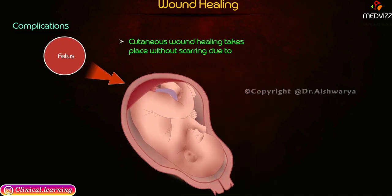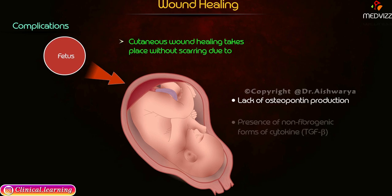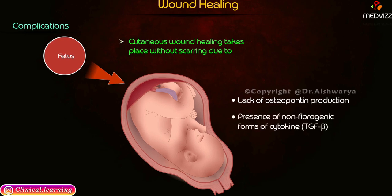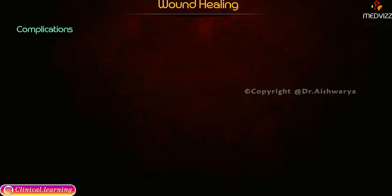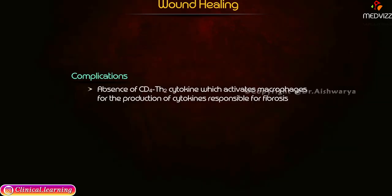Fetal cutaneous wound healing takes place without scarring, mainly due to lack of osteopontin production and the presence of non-fibrogenic forms of cytokines, especially transforming growth factor beta (TGF-β). Because of this, there is less collagen in wound healing in those individuals. The absence of CD4 TH2 cytokine, which activates macrophages for cytokine production, is responsible for the development of fibrosis. These are the important points of the wound healing process.